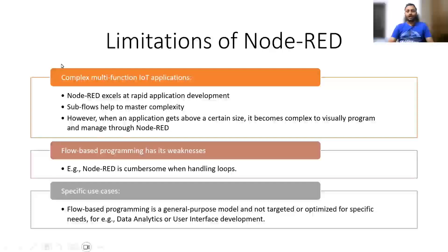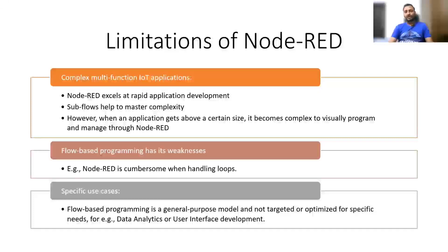The limitations of Node-RED are: first, it is not very useful for complex multi-function IoT applications, because Node-RED is best suited for rapid prototyping and rapid application development. Sub-flows can be used within a main flow to handle some complexity, but when the application grows large, visual programming becomes difficult. Additionally, flow-based programming has weaknesses — for example, handling loops is difficult. Node-RED is also not optimized for specific use cases like data analytics or user interface development.